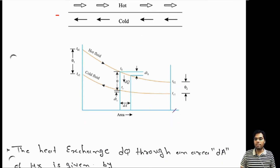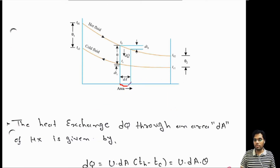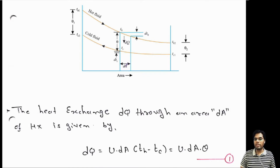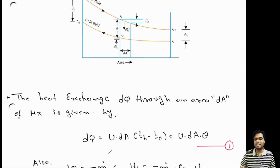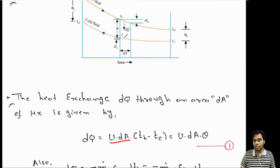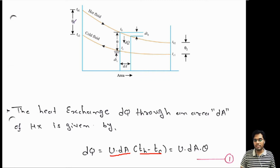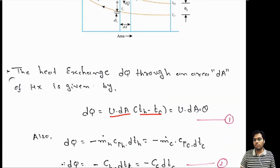As we have done in LMTD, let's take one elementary area DA for analysis. The heat transfer in this particular area is DQ, which we can write as DQ = U·DA·(TH - TC), where U is the overall heat transfer coefficient, DA is the area, and TH minus TC is the temperature difference at that point. This temperature difference TH minus TC can be written as theta, so DQ = U·DA·theta.